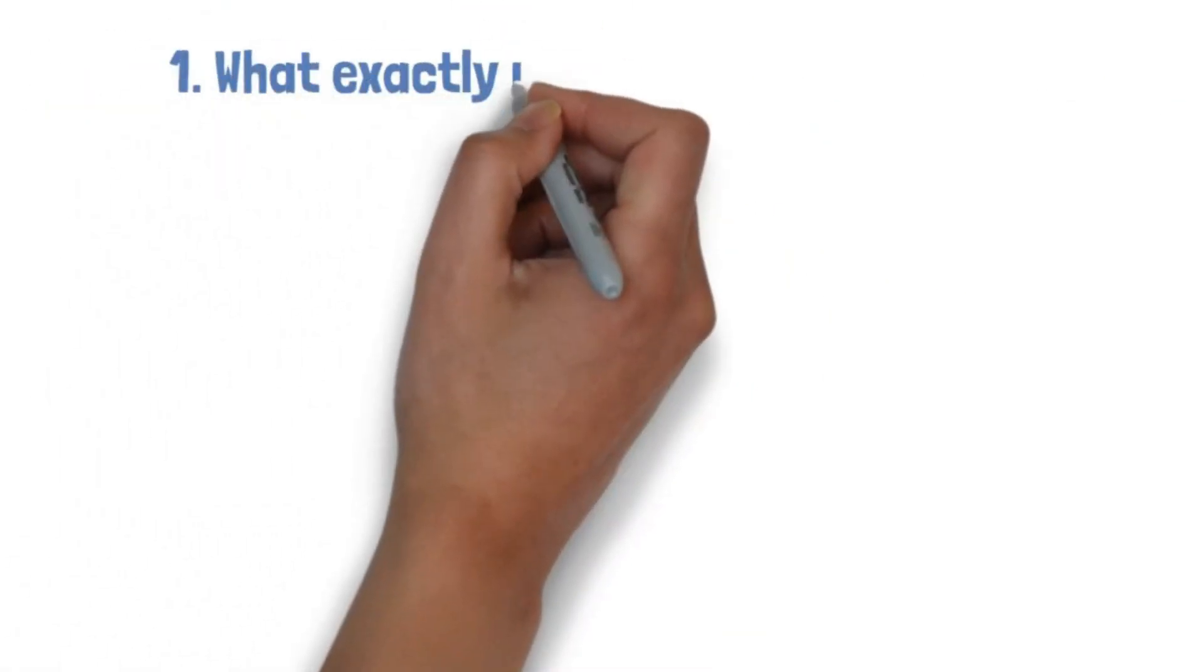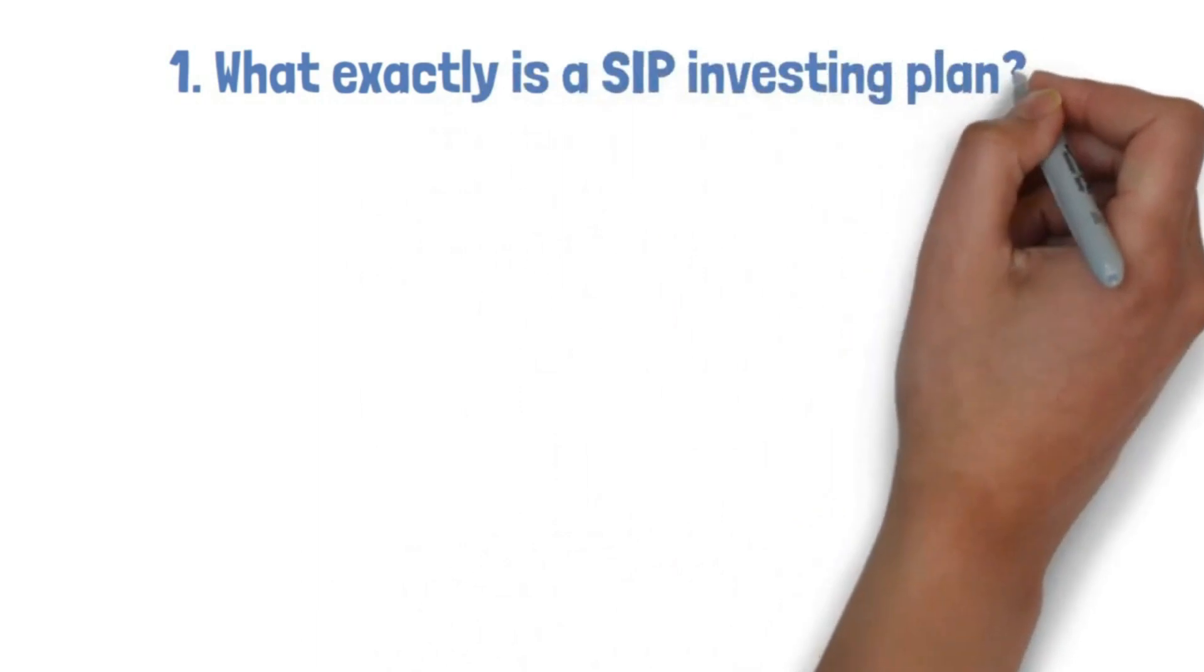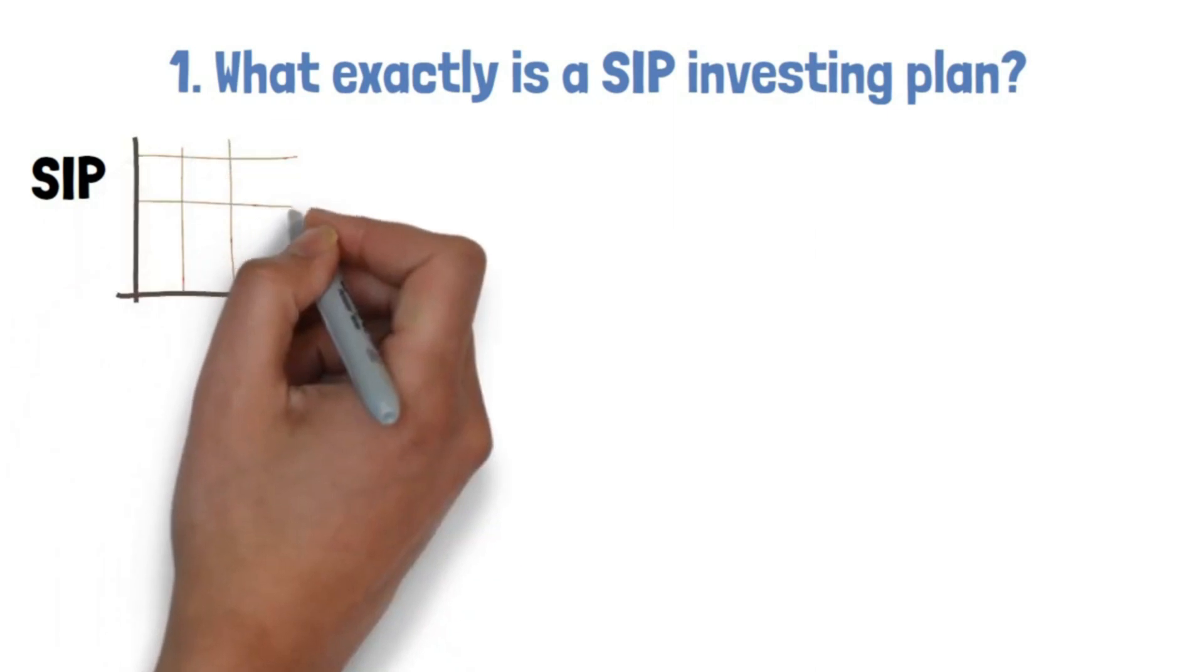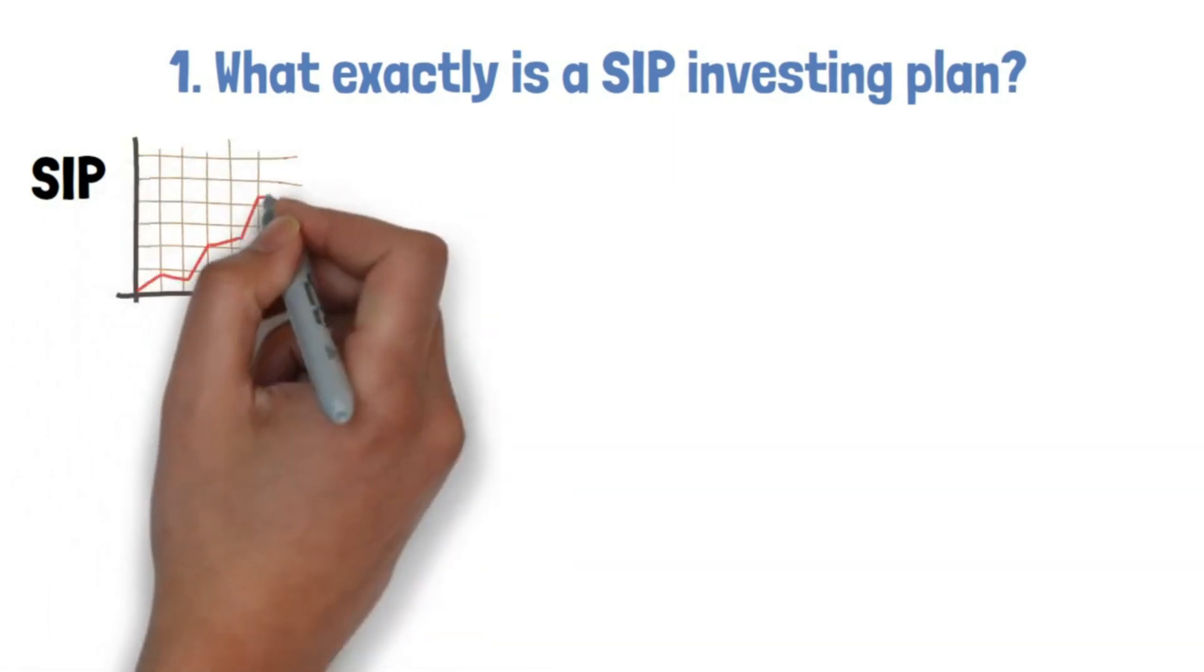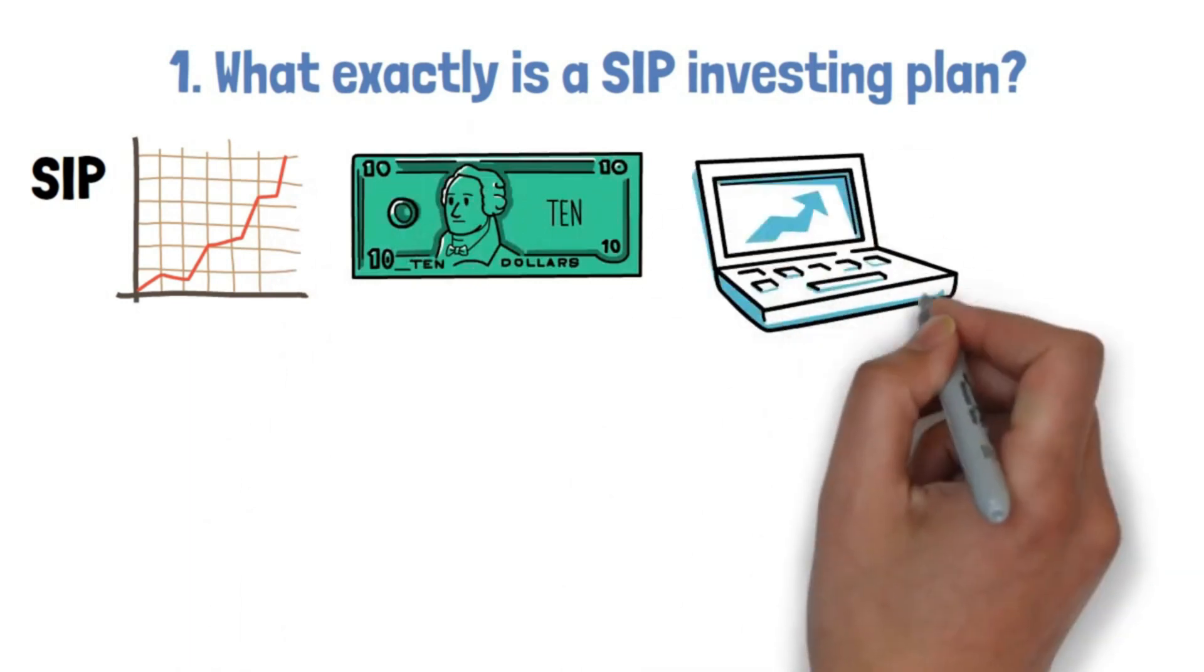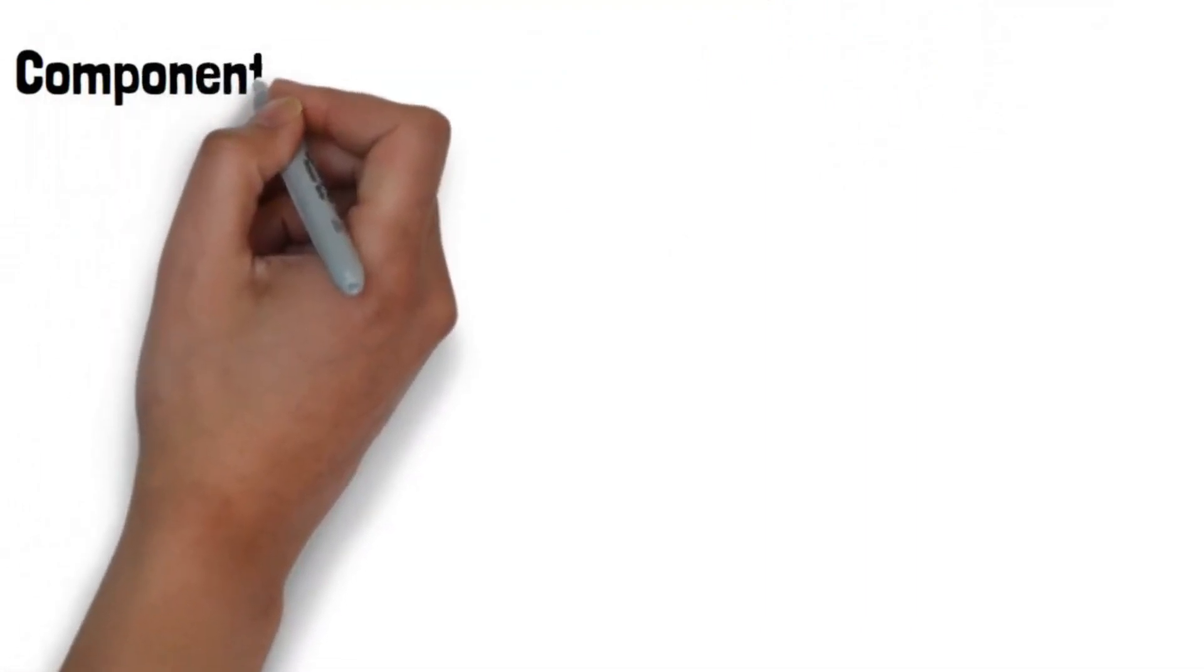1. What exactly is a SIP investing plan? A strategic investment plan, SIP, is a financial planning instrument that allows investors to generate long-term wealth by putting a certain amount of money in an investment portfolio on a constant and regular basis. Let us unpack this concept by looking at some of its components.